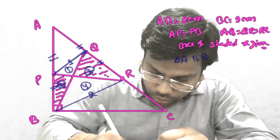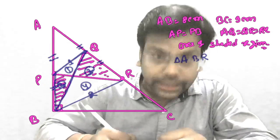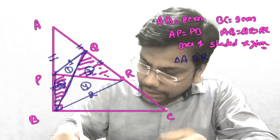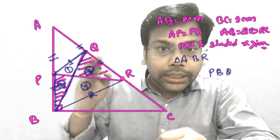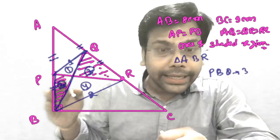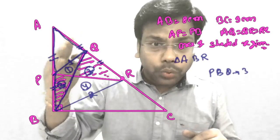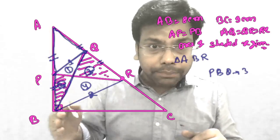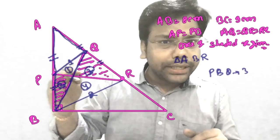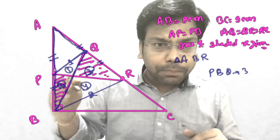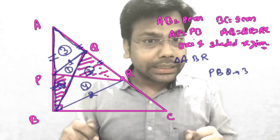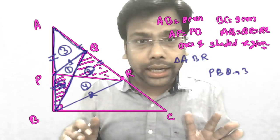Now please see this triangle in the left corner — triangle PBQ. Here one part is 1 and another is 2, so by area this region is 3. In triangle ABQ, PQ is the median. So PQ divides triangle ABQ into two equal halves. If 1 plus 2 is 3, then the other half is also 3.